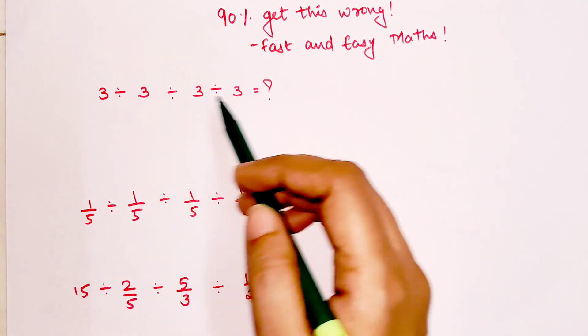So basically when you have something like this: 3 divided by 3 divided by 3 divided by 3. What people mostly make a mistake over here is that they divide these two and get 1, and then they divide these two and get 1, and then 1 divided by 1 gets you 1. That's not how this works.